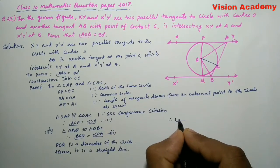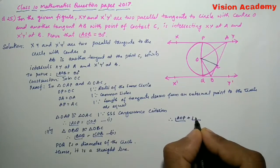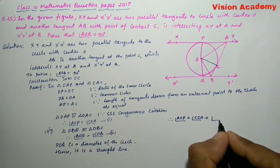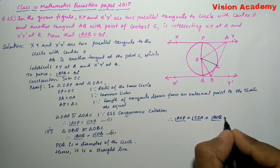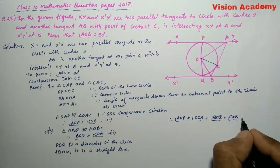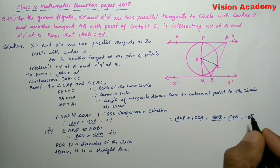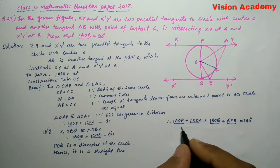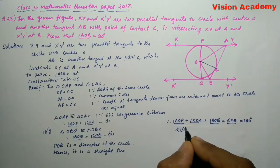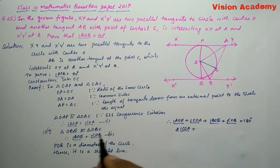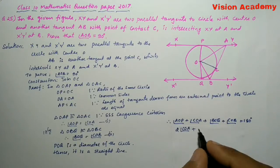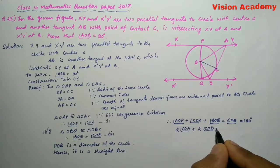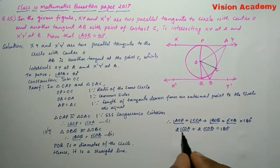Therefore, angle OAP plus angle COA plus angle BOQ plus angle COB is equal to 180 degrees. Here, angle OAP is equal to angle COA from equation 1. In equation 2, angle BOQ is equal to angle COB. So, 2 times angle COA plus 2 times angle COB is equal to 180 degrees.